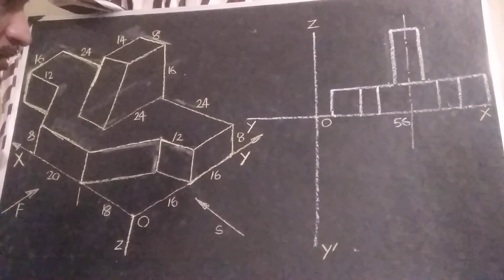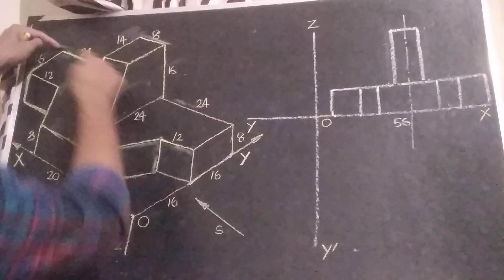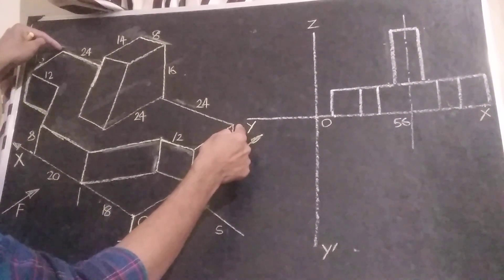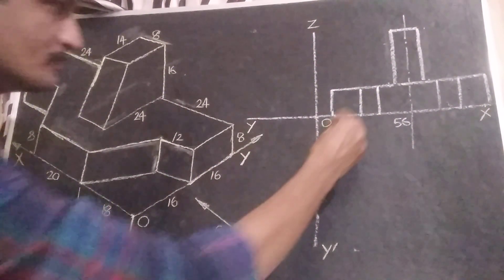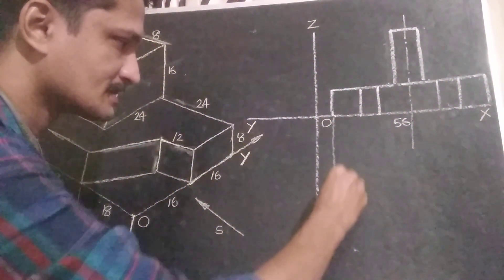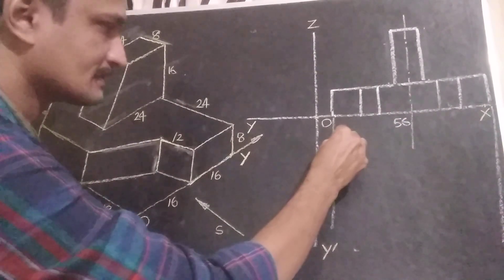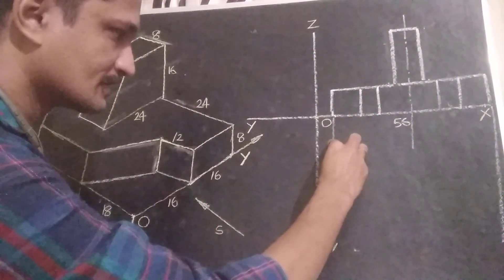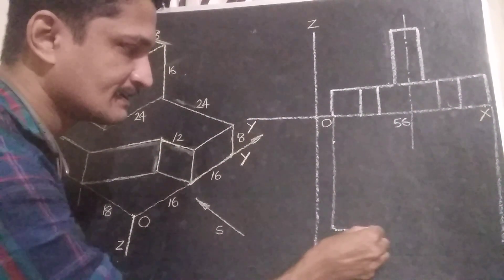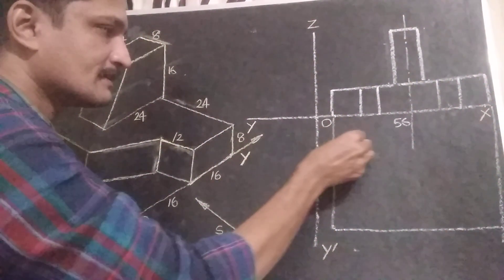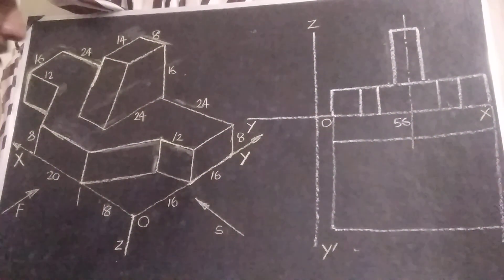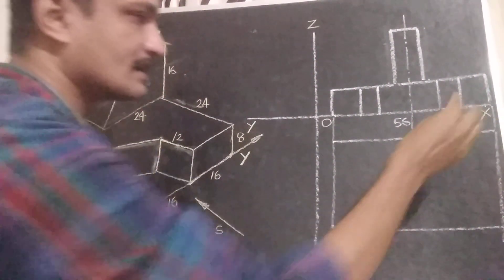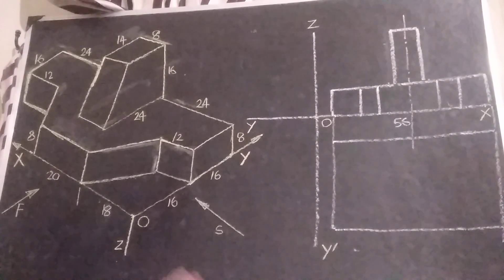Next we can draw the top view. In top view, the total width is equal to 56, and this total depth is equal to 32. We can project width 56 and draw a rectangle with width equal to 32. Use very thin lines for construction lines.